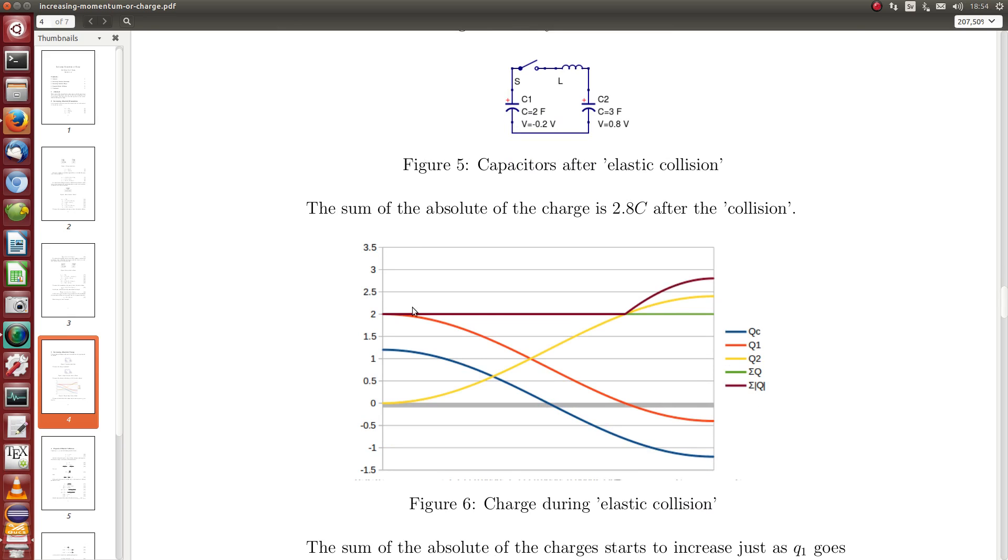Here we have constant charge of the system, which is the sum of the charges. But this one is the sum of the absolute of the charges, and as soon as the charge of the smaller capacitor goes below zero, it goes up.